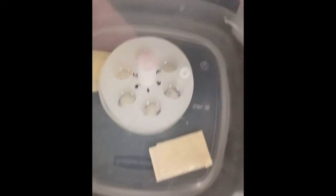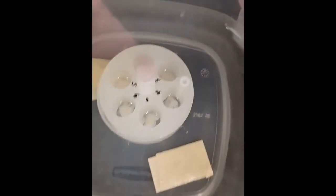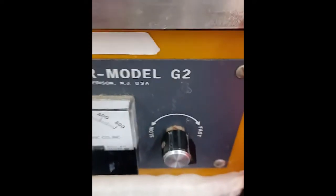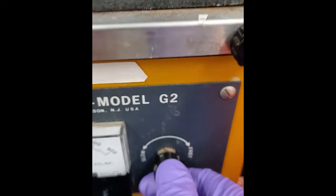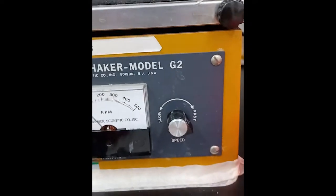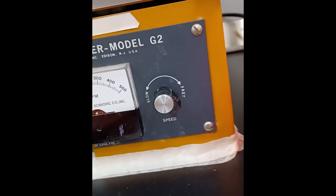If the shaker is set too high a speed, the solution may actually spill out of the basin, or the sections may get stuck along the edges and become damaged. The shaker does make a loud clunking sound like you hear here. Don't mind that too much.